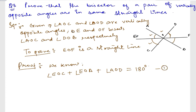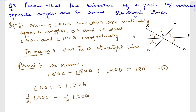We also know that angle AOC is equal to angle DOB — they are vertically opposite. If I take half of each, half of angle AOC equals half of angle DOB. The half of angle AOC can be written as angle EOC, and the half of angle DOB can be written as angle DOF. So angle EOC equals angle DOF. Let me put this as equation number 2.